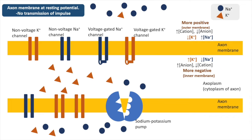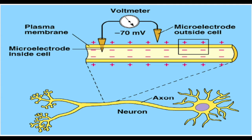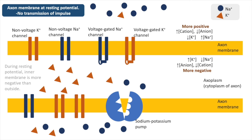The membrane potential of the neuron when there is no transmission of impulse is called the resting potential. Resting potential is typically between minus 60 millivolts and minus 80 millivolts. To make it easier, let's consider minus 70 millivolts as the voltage for resting potential.